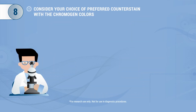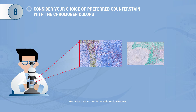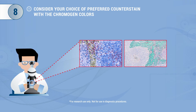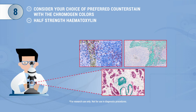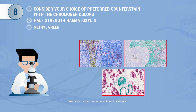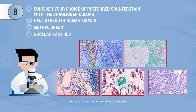Tip 8: Don't forget to consider the color of your preferred counterstain, particularly for image analysis purposes. If you are using a teal or blue chromogen, hematoxylin may be too similar in hue to distinguish. Consider using a half-strength hematoxylin counterstain or change to another counterstain such as methyl green or nuclear fast red.